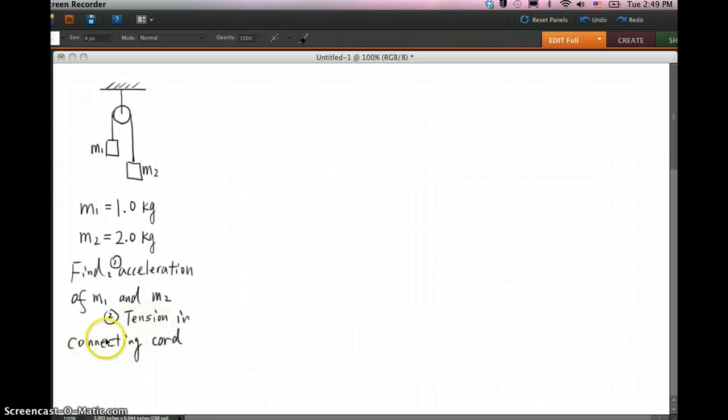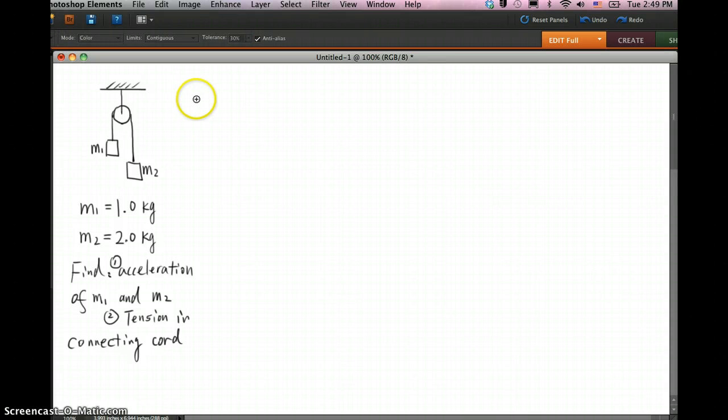And also the tension in the connecting cord. So we know both masses are connected, so they're moving at the same velocity and same acceleration. Because M2 is bigger, M2 is going to move down with acceleration A and M1 is going to move up with the same acceleration A.